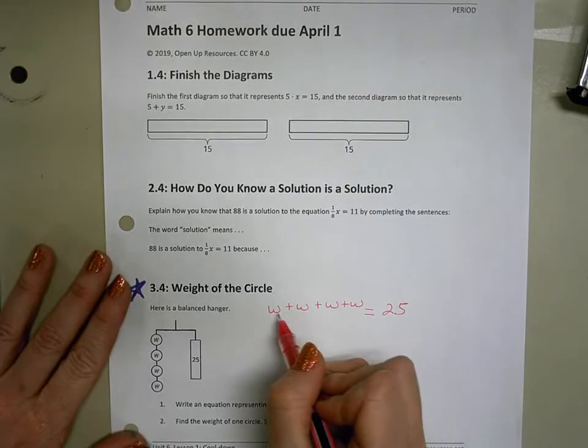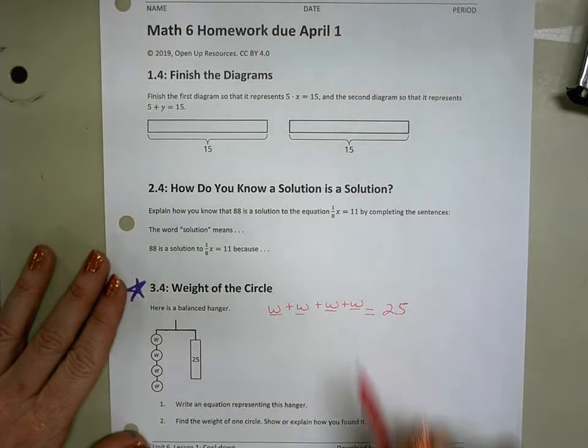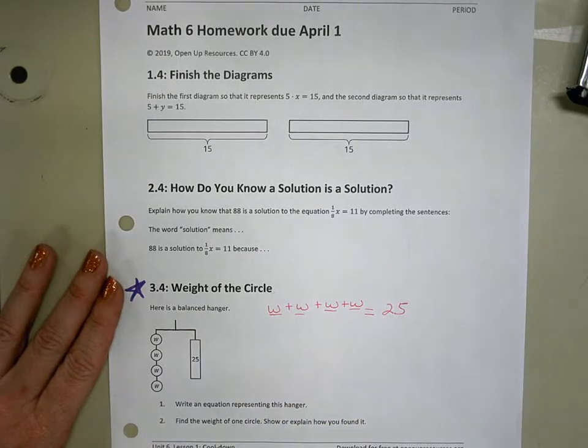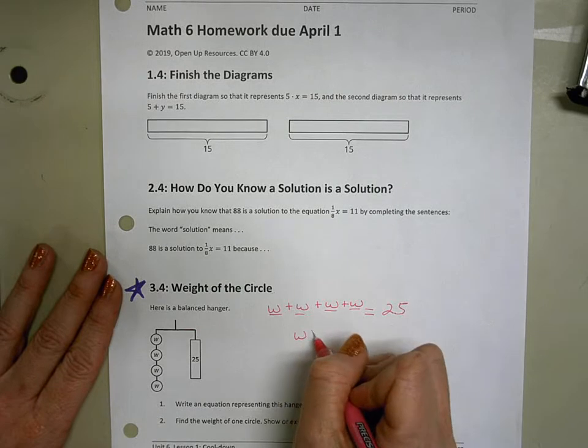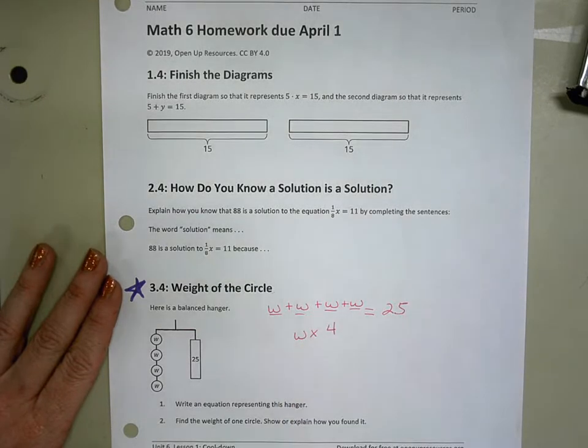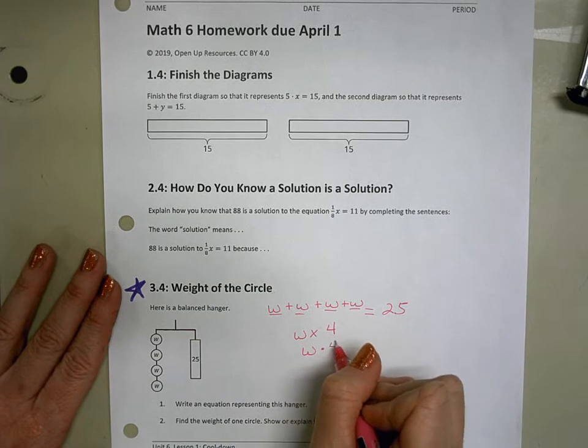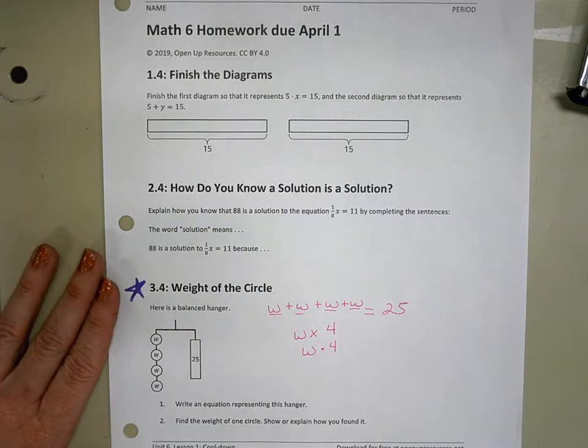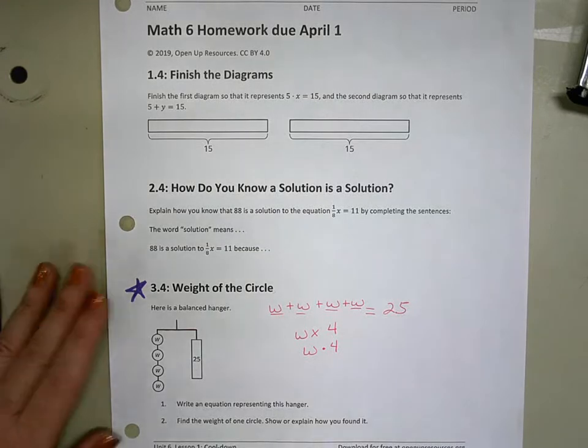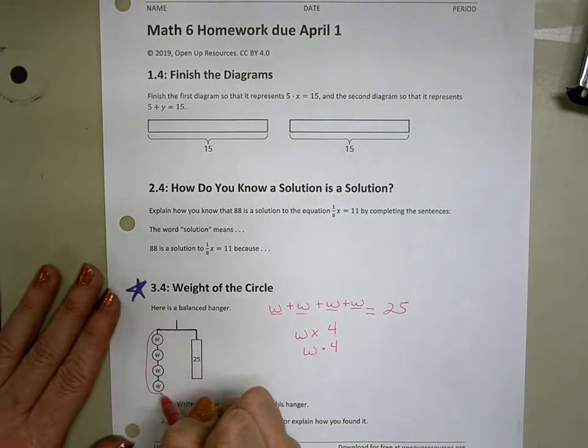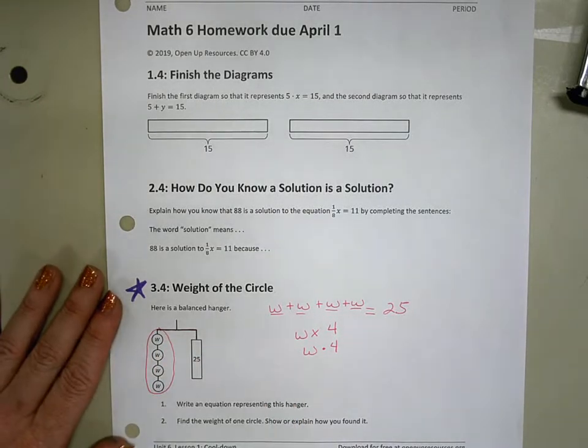But what we talked about this week is this is the same as saying W times 4. And we used to write multiplication this way. And then earlier this year, we talked about using this kind of notation to show multiplication. But this week we talked about we can actually write this down exactly as we see it.